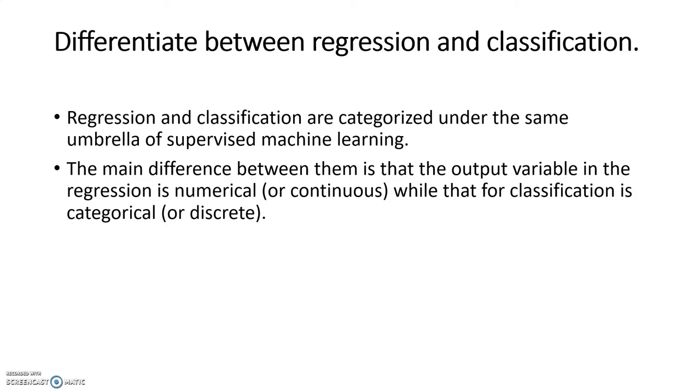Regression and classification both come under supervised learning. There are three different types of learning methodologies: supervised, unsupervised, and reinforcement. But these two, regression and classification, come under the supervised machine learning category.